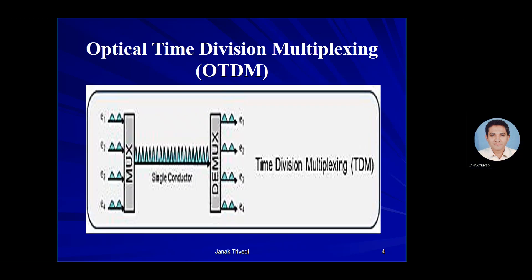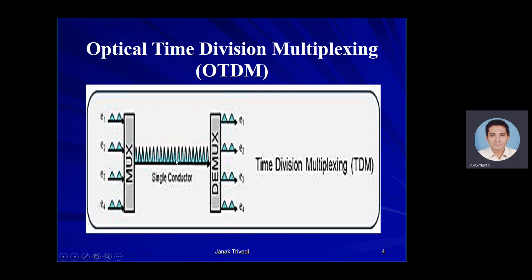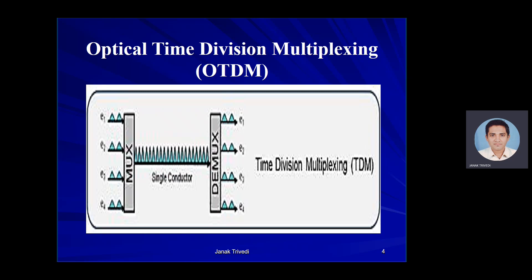Optical Time Division Multiplexing (OTDM) is a simple way of transmitting more data by using smaller and smaller increments of time, multiplexing lower data rate signals into a higher speed composite signal. OTDM basically multiplexes a number of low bit-rate optical channels in the time domain. These low bit-rate optical channels — E1, E2, E3, E4 — are multiplexed using optical time division multiplexing. Each signal is transmitted over a single communication channel by dividing the time frame into slots, one slot for each message signal.